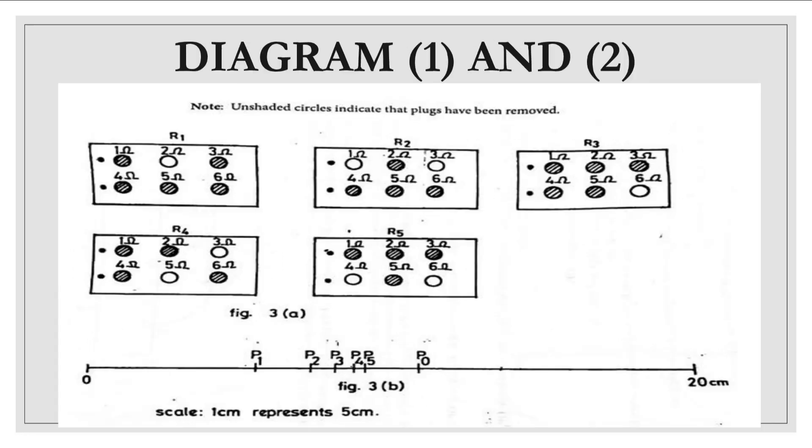Now the resistances are given for us so R1 for P1 we have here two ohm, R2 for P2 we have here four ohms and so forth until we get to R5 where we have 10 ohms.